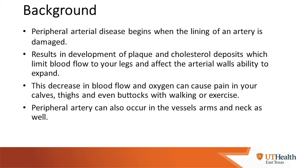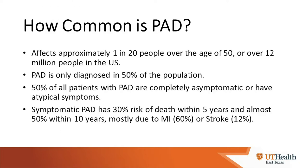Peripheral artery disease can also occur in the vessels of your arms and neck. It affects approximately one in twenty people over the age of fifty, or over twelve million people in the United States. However, PAD is only diagnosed in fifty percent of the population. Fifty percent of all patients with peripheral artery disease are completely asymptomatic or have atypical symptoms. Symptomatic PAD has a thirty percent risk of death within five years and almost fifty percent within ten years, mostly due to myocardial infarction, accounting for about fifty to sixty percent, or stroke, accounting for about twelve to twenty percent.